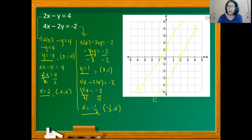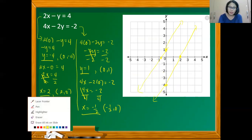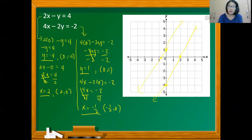When we connect the two pairs of points, we come up with two parallel lines. So we can say that the system is inconsistent. Since the system is inconsistent, the solution set is empty.